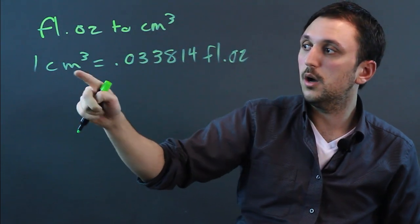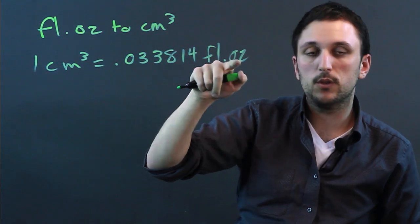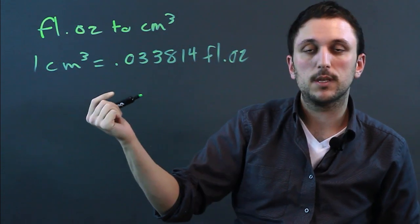So one cubic centimeter equals a very small amount of one fluid ounce. That means a fluid ounce is bigger than a cubic centimeter.